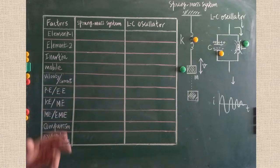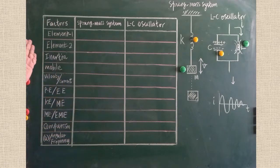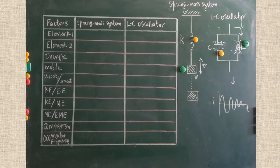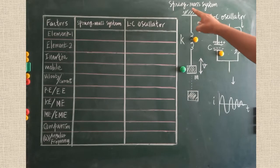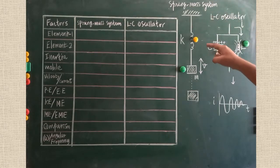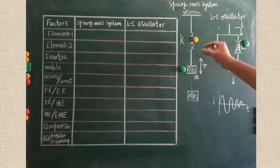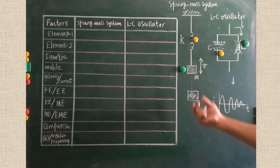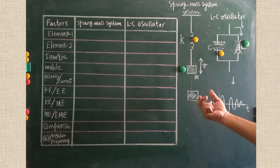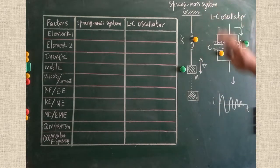We are going to list out the factors which are analogous to each other. First I will explain what kind of oscillations are generated in both the two systems. Here two systems are there — one is the spring-mass system, already familiar to you from 11th standard. One mass is tied up with a spring; if it is pulled, it moves up and down, creating vertical oscillations. This is called the spring-mass system, in which mechanical oscillations are set up.